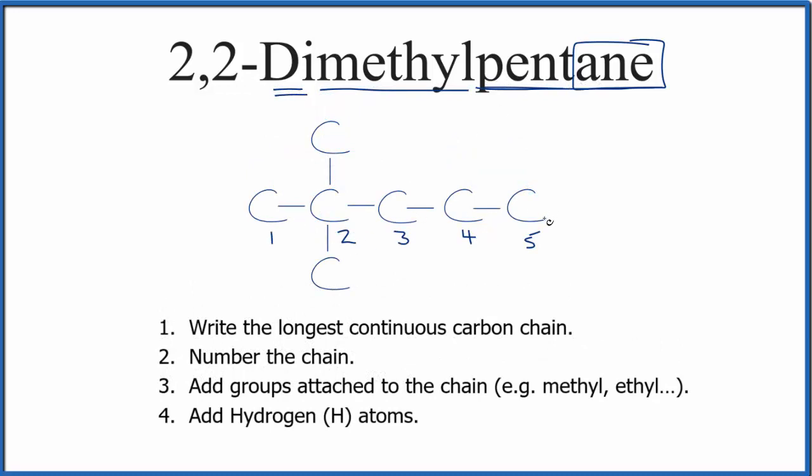Pentane, that's the longest chain. We have five carbons, and it's an alkane, so they're all single bonds. Then we have two methyl groups, these carbons here, on the second carbon atom in our longest chain.